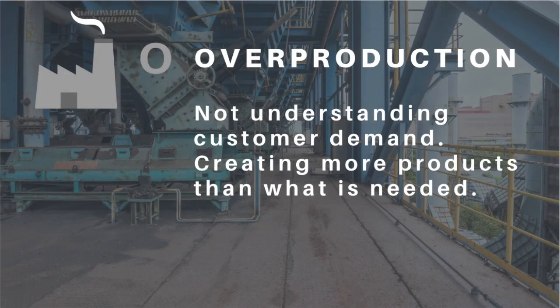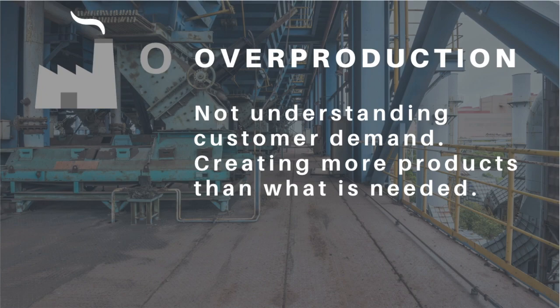The next form of waste is Overproduction. Overproduction occurs when the organization doesn't fully understand the customer's demand, and because of that, they create more products than are necessary. Having excessive products on hand is wasteful for multiple reasons — one is that these items have to be stored as inventory, and there is a risk that items will expire prior to being delivered to the customer.